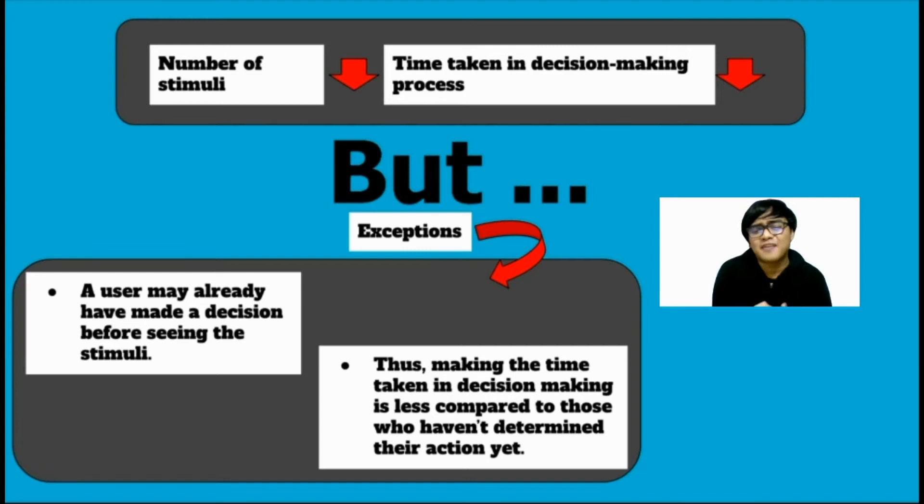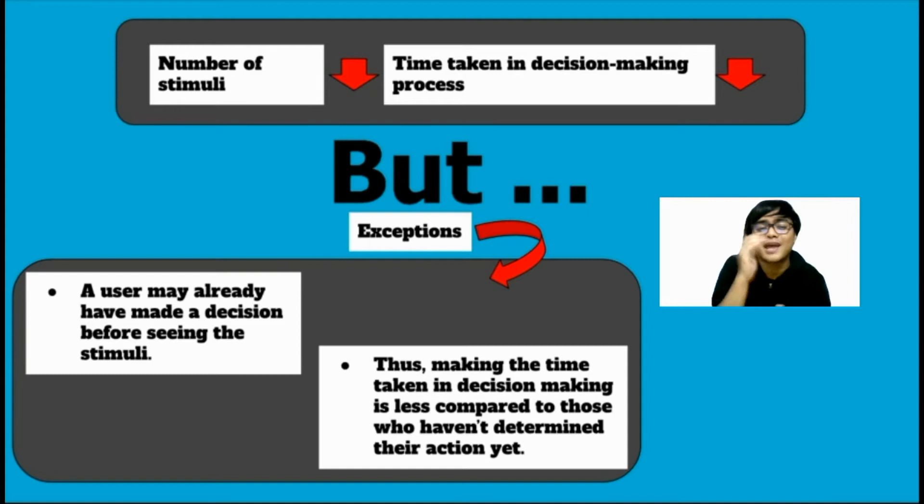But there are exceptions to this rule. For instance, the user might already have something in mind before they come across the stimuli, so the time for those users is likely to be less compared to those who have not yet decided before seeing the stimuli. That's basically it.